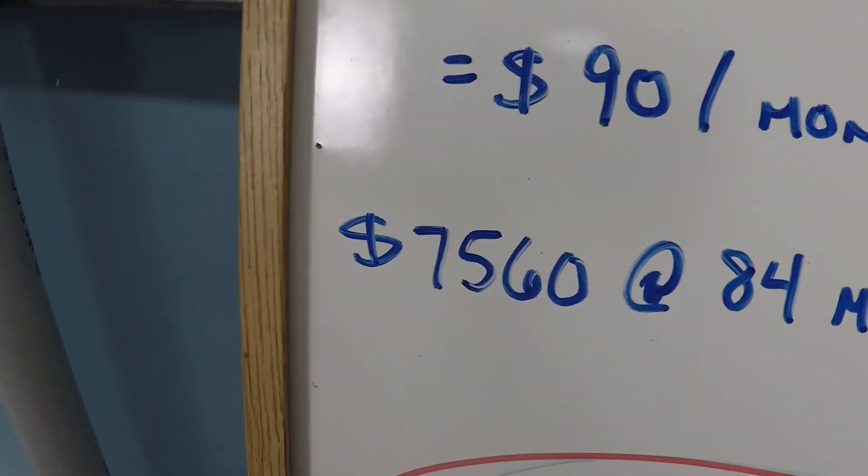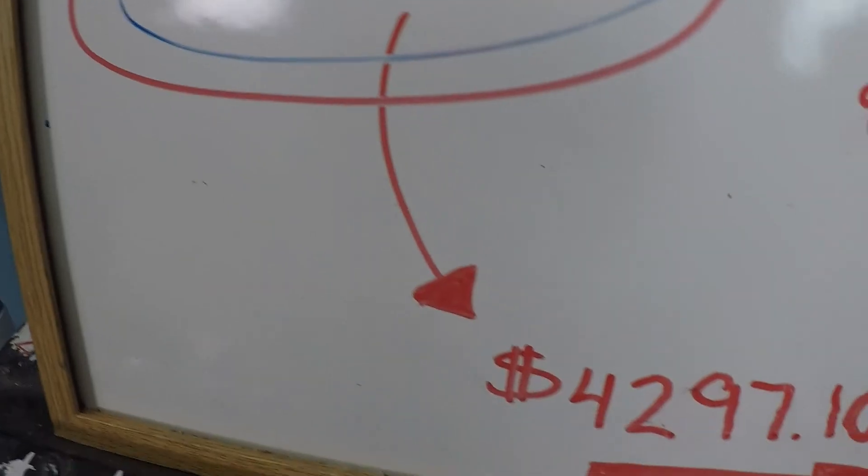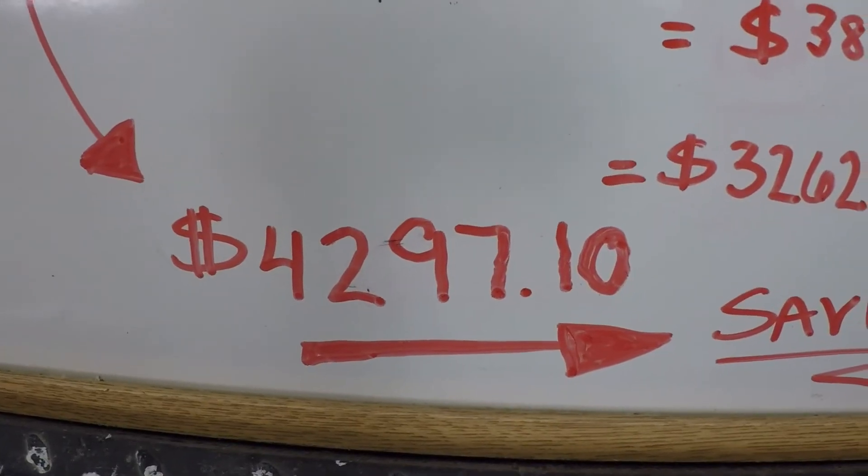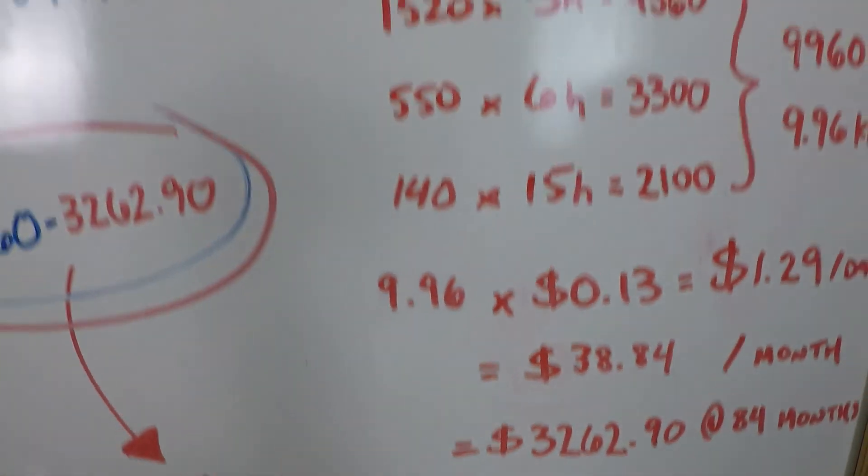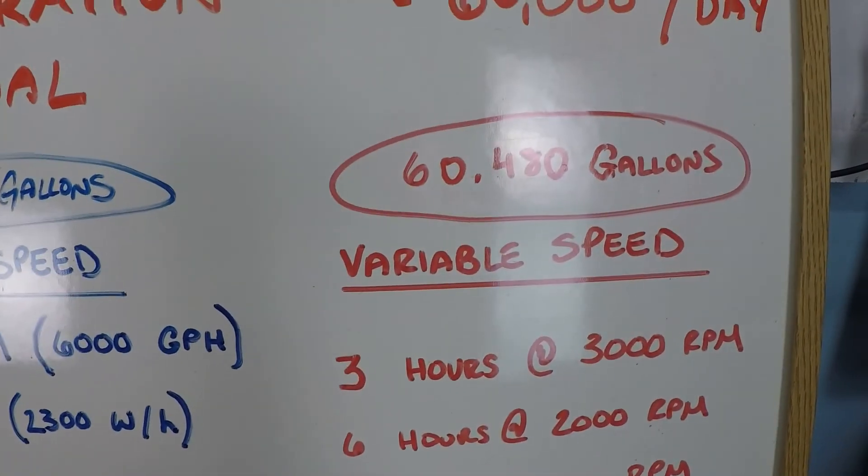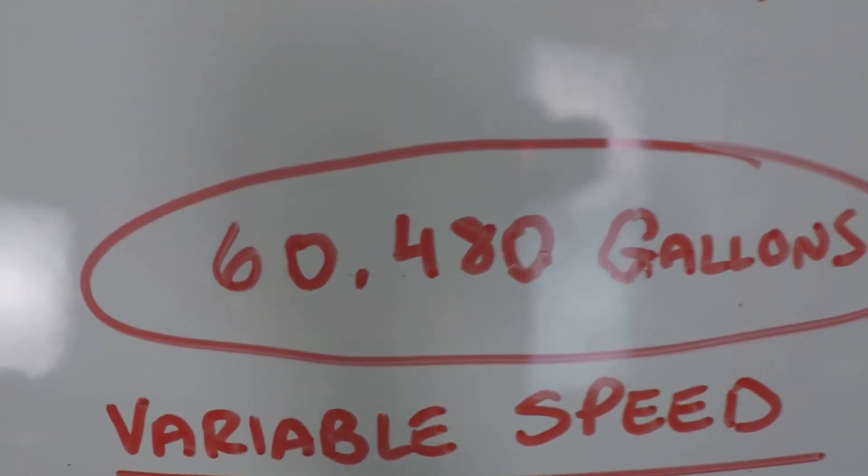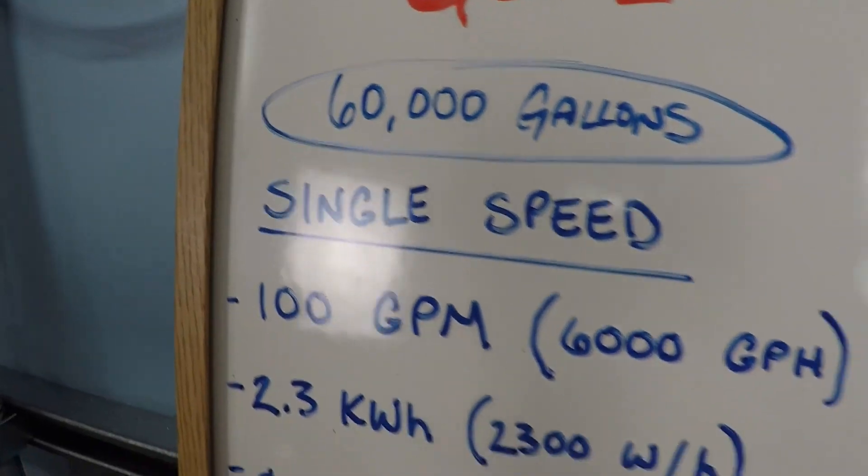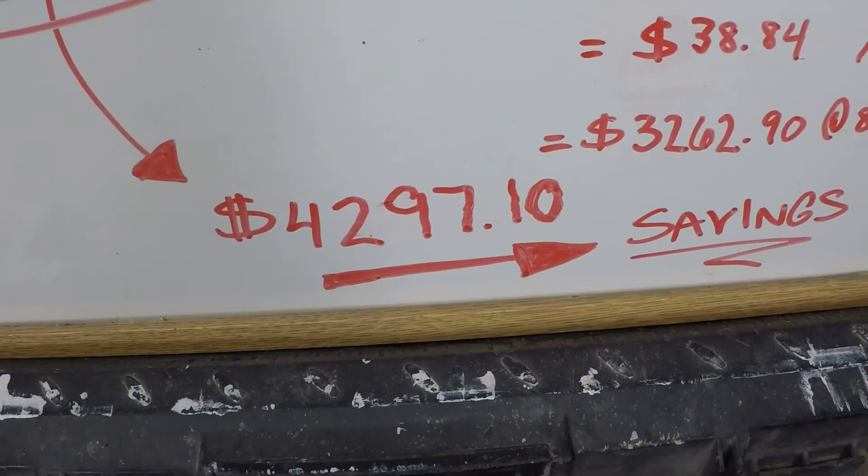Comparing that with the number to operate your single speed pump, what you're left with is a total savings of $4,297.10. By choosing a variable speed pump for your swimming pool, you're getting more volume per day than you were getting from a single speed pump, and it costs you substantially less to do so.